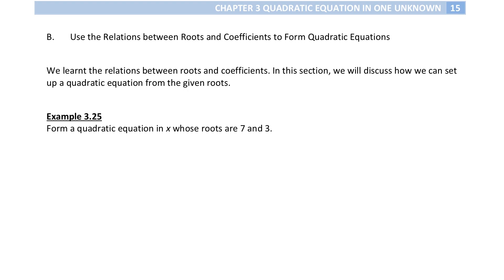In the previous video I have already introduced the relation between the coefficients and the roots. If the coefficient of x squared is equal to 1, and alpha and beta are the roots of this quadratic equation, I know the sum of roots is equal to the negative coefficient of x over 1, so it's negative b. And alpha times beta is equal to c over a, that means c over 1. So we can make good use of this relationship.